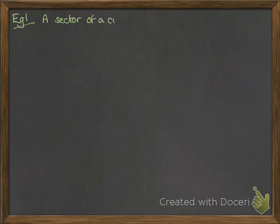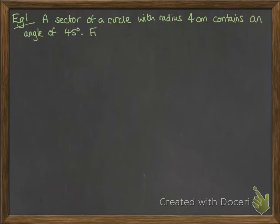Now an example. A sector of a circle with radius 4 centimeters contains an angle of 45 degrees. Find the area of the sector.